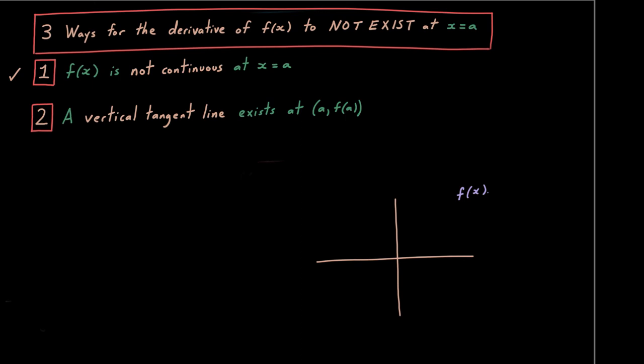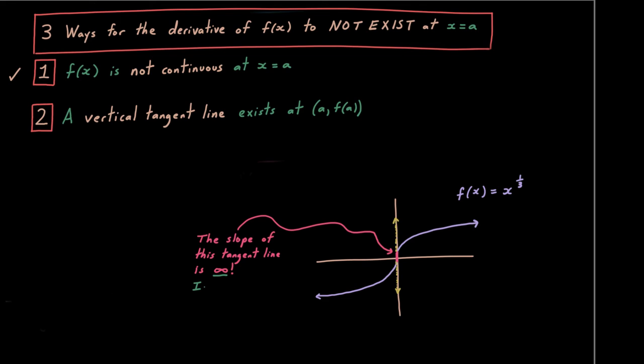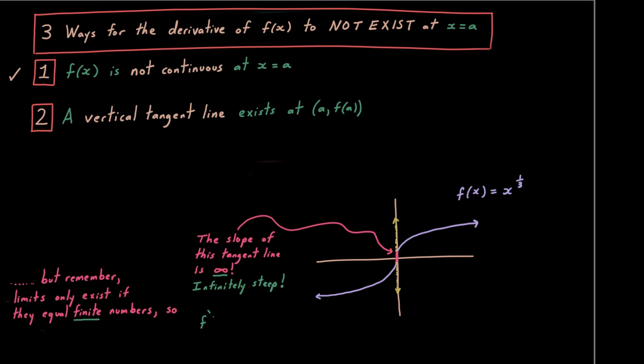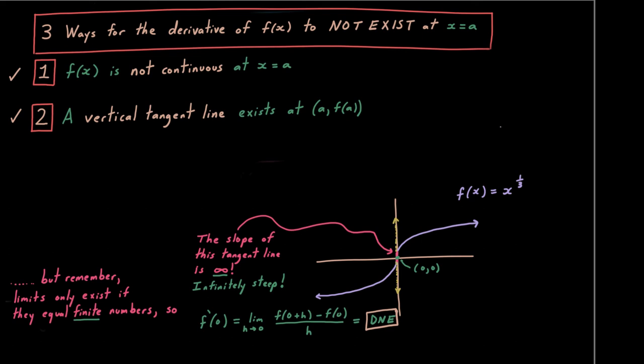The second way: a vertical tangent line at (a, f(a)) means the derivative doesn't exist there. For example, the graph of x^(1/3) has a vertical tangent at the origin with infinite slope. Since limits only exist when they equal finite numbers, that infinite limit means the derivative is undefined. Notice: applying the power rule gives (1/3)x^(−2/3), which is undefined at x = 0.